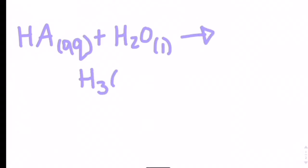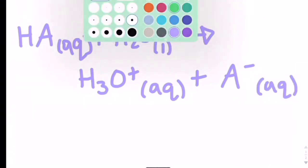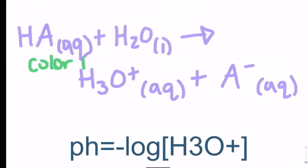If the pH is low, the concentration of H3O+ is high, so equilibrium is to the left, so color one is produced.